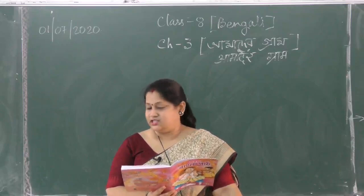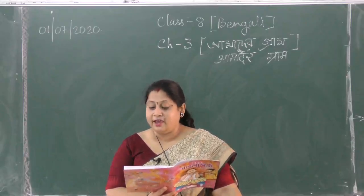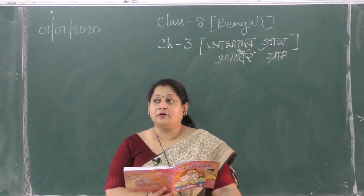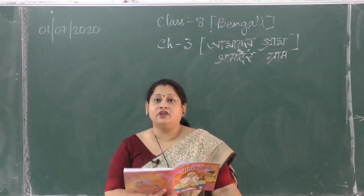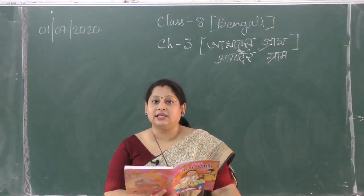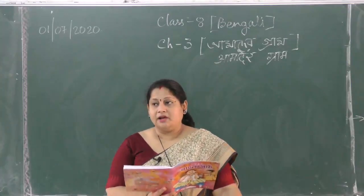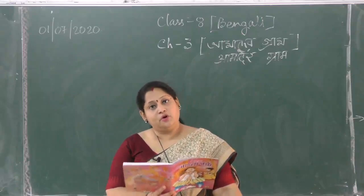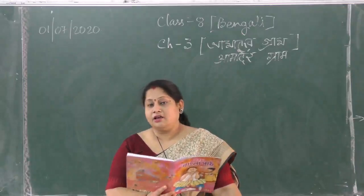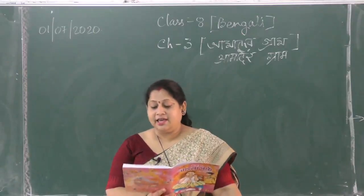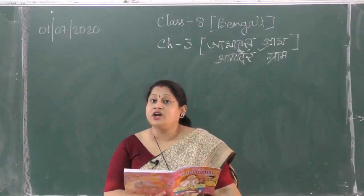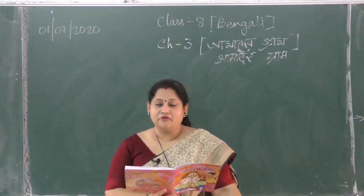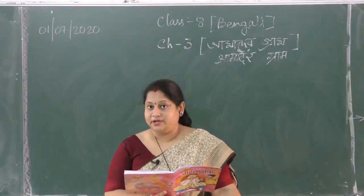Dhan means dhan ka paudha — the rice plant — jis se chaval hota hai. And jol bhoradighi — lot of water, means ponds and rivers. Bangladesh mein bahut saare nadi aur pond aur lake is tarah ka hai. Yahan par bol rahe hain ki chaand ka roshni jaise hi us par padta hai, girta hai, toh woh chamakne lagta hai.